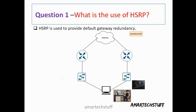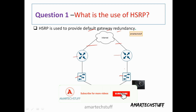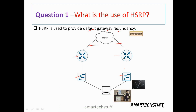Question one: What is the use of HSRP? HSRP is used to provide default gateway redundancy. In a campus network we will have dual external links, dual routers, dual switches — everything will be dual to achieve network redundancy. A good design should have network redundancy. From the end user's point of view, a PC can have only one default gateway — either R1 or R2. If R2 fails, the network administrator has to reconfigure the default gateway, causing downtime.